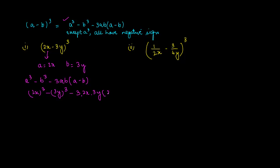Again, a is 2x minus 3y. So 2x cube will be 2 cube, which is 8x cube minus 3 cube will be 27y cube minus 3 into 2 is 6 into 3 is 18, x into y is xy, 2x minus 3y.